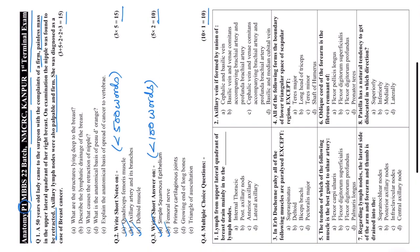Primary cartilaginous joints is an important question from general anatomy. The best example is between the epiphysis and diaphysis of long bones. Other examples include costochondral joints, first chondrosternal joint, spheno-occipital joint, joints between pubis-ilium-ischium forming the hip bone, the sacrum, intervertebral joints between sacral vertebral bodies, and the joints where pedicles join the vertebral body and the two halves of the neural arch join to form the vertebral spine. These are temporary joints undergoing synchondrosis at skeletal maturity.